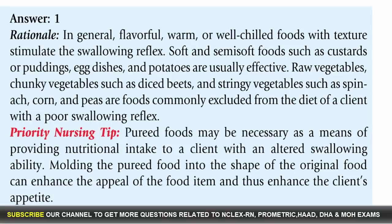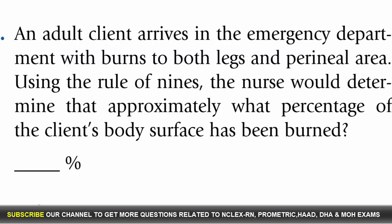Soft and semi-soft foods such as custards or puddings, egg dishes, and potatoes are usually effective. Raw vegetables, chunky vegetables such as diced beets, and stringy vegetables such as spinach, corn, and peas are foods commonly excluded from the diet of a client with a poor swallowing reflex.